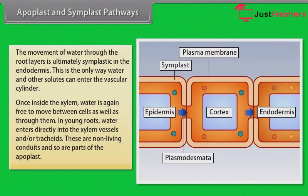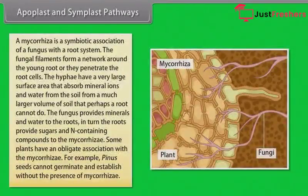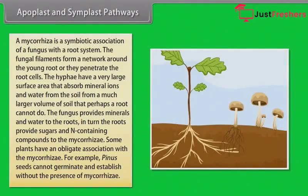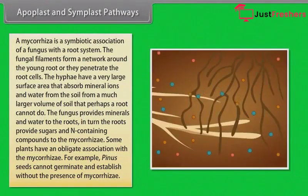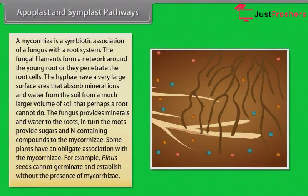Some plants have additional structures associated with them that help in water and mineral absorption. A mycorrhiza is a symbiotic association of a fungus with a root system. The fungal filaments form a network around the young root or they penetrate the root cells. The hyphae have a very large surface area that absorbs mineral ions and water from a much larger volume of soil than perhaps a root can do. The fungus provides minerals and water to the roots; in turn, the roots provide sugars and nitrogen-containing compounds to the mycorrhizae. Some plants have an obligate association with mycorrhizae — for example, pine seeds cannot germinate and establish without the presence of mycorrhizae.